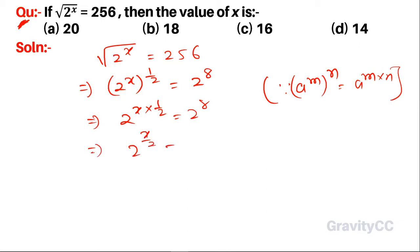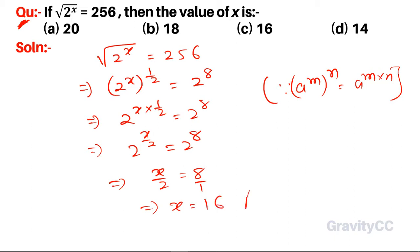x upon 2 is equal to 2 to the power 8. Since the base is the same, equating powers: x upon 2 equals 8. Cross multiplying gives x equals 16. So option C is the correct answer.